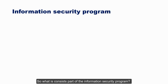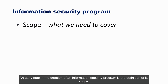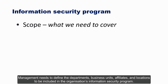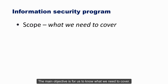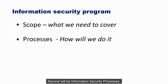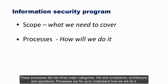The information security program has several key components. First, the scope — an early step in creating an information security program is the definition of its scope. Management needs to define the departments, business units, affiliates, and locations to be included. Second, information security processes — these fall into three major categories: risk and compliance, architecture, and operations. Processes define how the program will be executed.